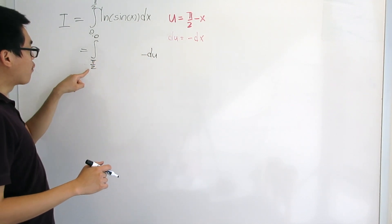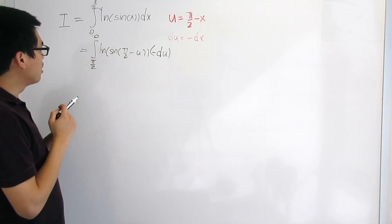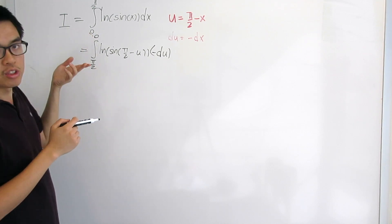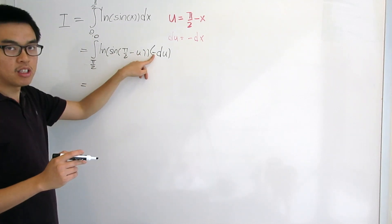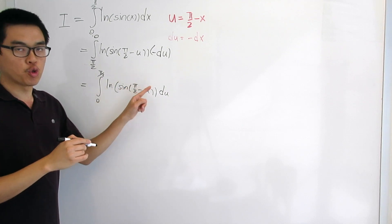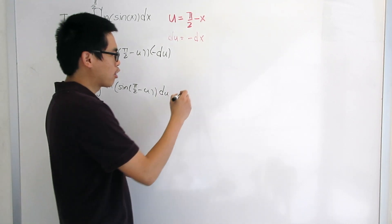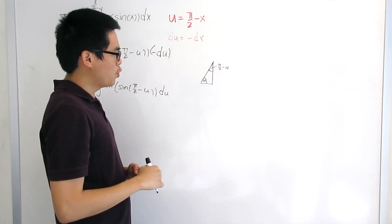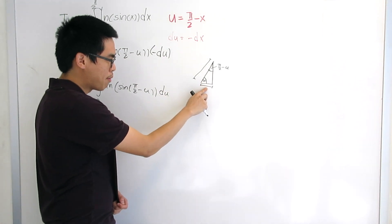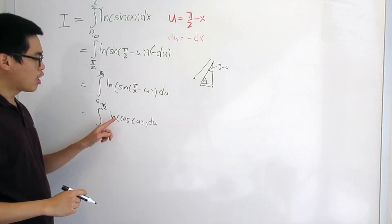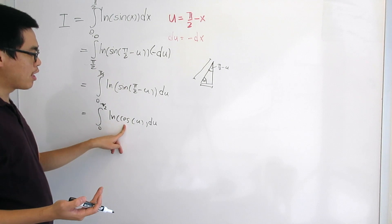Applying the substitution: since du = −dx, we have dx = −du, and u goes from π/2 to 0. We can switch the bounds — which introduces a minus sign — but that cancels with the existing minus sign, giving us the integral from 0 to π/2 of ln(sin(π/2 − u)) du. Now, sin(π/2 − u) is just cos(u), which you can verify with a right triangle. So this becomes the integral from 0 to π/2 of ln(cos u) du.